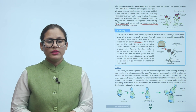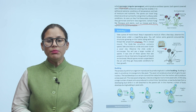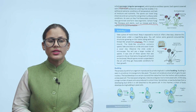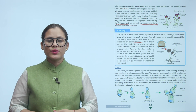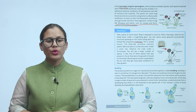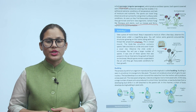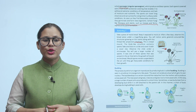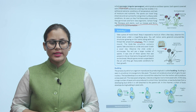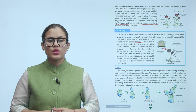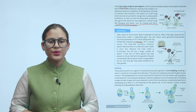Budding: The process by which an organism reproduces by producing buds is called budding. Budding is seen in unicellular microorganisms like yeast. The yeast cell produces a bud which gets its own nucleus. The bud develops to a certain size and then detaches from the mother cell to produce a new yeast cell. The new yeast cell grows, matures, and gives rise to more yeast cells. In this way, a large number of yeast cells are produced in a short time.